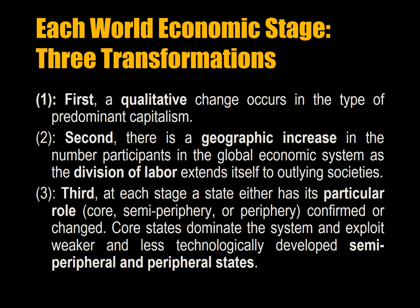Third, at each stage a state either has its particular role confirmed or changed. These roles are either core — meaning the leading financial and manufacturing states — semi-peripheral, which are states in the process of development or slightly less wealthy, or periphery, which are states that provide primary agricultural and other resources. Core states dominate the system and exploit weaker, less technologically developed semi-peripheral and peripheral states.